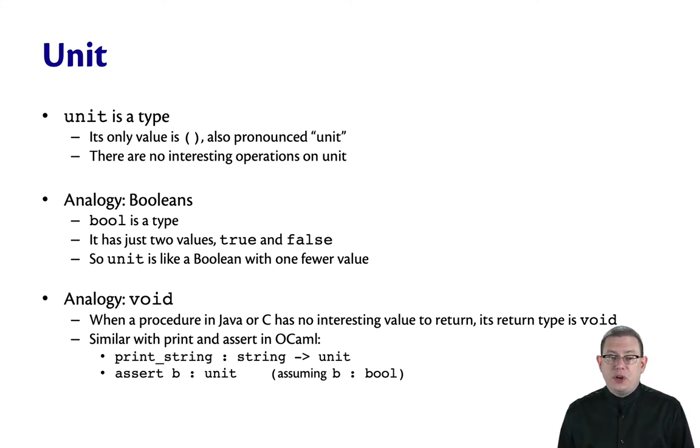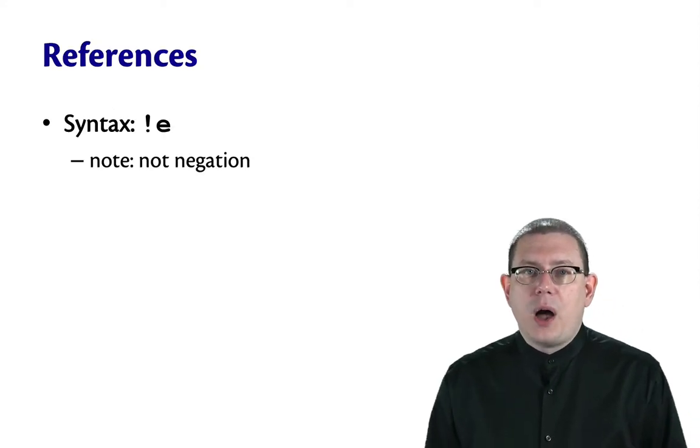So this is similar to both print and assert in OCaml. For example, if you do a print string in OCaml, that's a function that takes in a string and returns unit. In other languages, it might just be a void return type. Similarly, if you assert a Boolean expression that has type unit, there's nothing interesting that can happen other than an exception would get raised if the assertion fails.